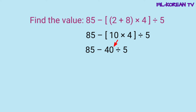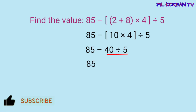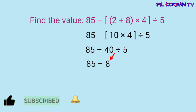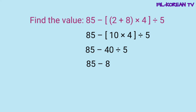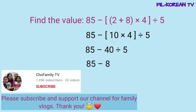Tapos na natin i-solve yung nasa loob ng grouping symbols. Ngayon, ang isusunod natin i-solve ay itong divide: 40 divided by 5 equals 8. At ang panghuli natin i-solve — ito na yung minus: 85 minus 8 equals 77. So yung answer sa problem na ito ay 77.